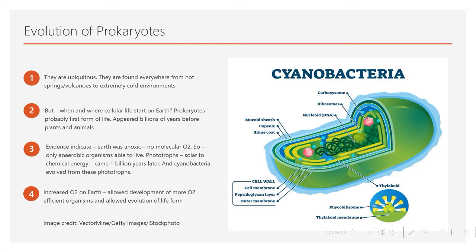This evolution is very interesting because eukaryotic cells of today suggest they have evolved from prokaryotic cells. Prokaryotes are present everywhere — from hot springs to volcanoes and even the most frigid regions. For example, in Russia, the coldest place on Earth is Oymyakon, where temperatures go as low as minus 72 degrees Celsius, or about minus 160 degrees Fahrenheit. For us humans that's really cold, but for these bacteria it's not a problem.